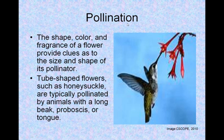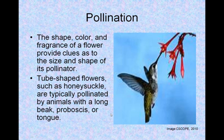Pollination is the main purpose of the flower. The shape, color, and fragrance of a flower provide clues as to the size and shape of its pollinator. Tube-shaped flowers, such as honeysuckle, are typically pollinated by animals with a long beak, proboscis, or tongue. Here's a picture of a bird pollinating some flowers.